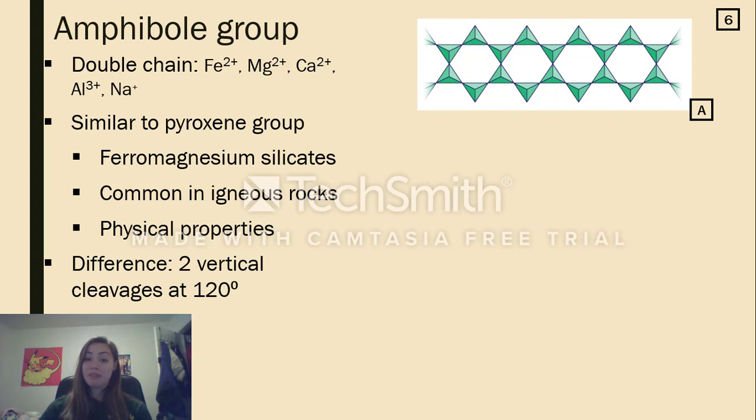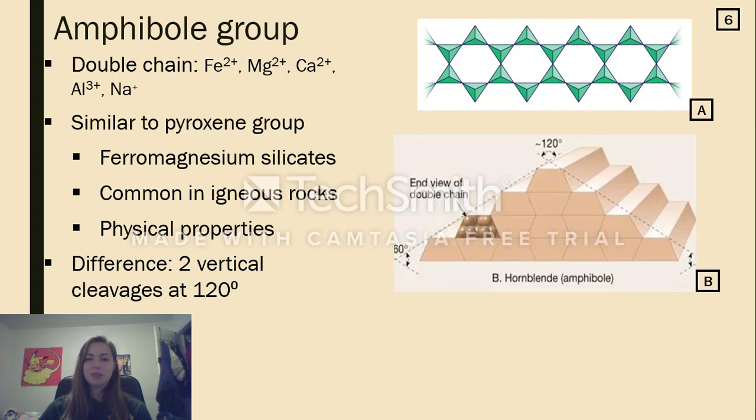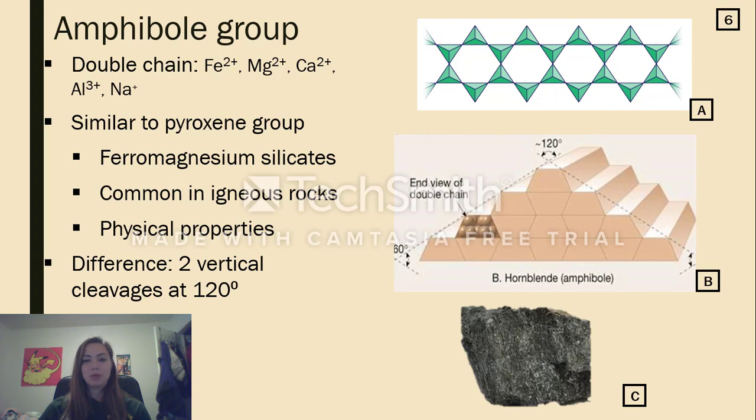The main distinguishing feature between the two, between amphibole and pyroxene, is the difference in their vertical cleavages. Since the double chain structure is wider than the single chain, the vertical cleavages must be as well. So instead of being perpendicular to each other, amphibole's cleavages occur at 120 degrees away from each other. Amphiboles also come in a variety of colors and hornblende is the most common mineral out of this group.